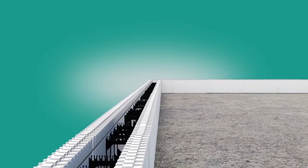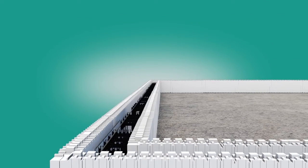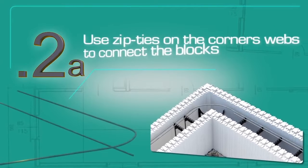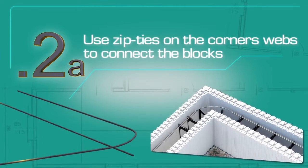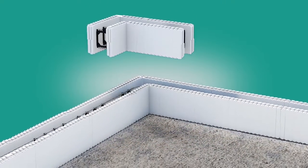On the first course, use zip ties on the webs to connect the blocks and pull them snugly together. Following this, install horizontal rebar by placing it in the clips at the top of the internal webs within the block cavity. The clips hold the rebar securely and eliminate the need for wire tying. Repeat this step for each course of block.